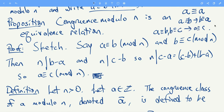So in other words, congruence modulo n behaves a lot like equality does. Let's try to prove the transitive property.